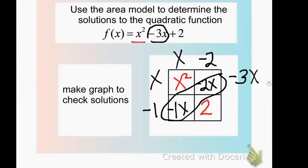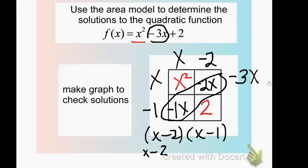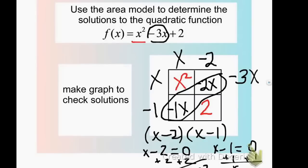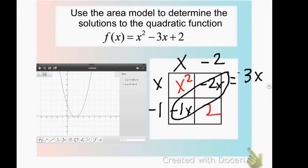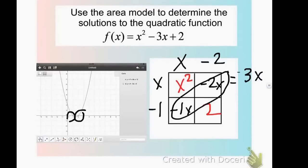So the intercept form is x minus 2 times x minus 1. To find solutions, we set each factor equal to 0 using the zero product property. Adding 2 to both sides gives x equals 2, and adding 1 to both sides gives x equals 1. Checking the graph, the x-intercepts are at positive 1 and positive 2, just as expected.